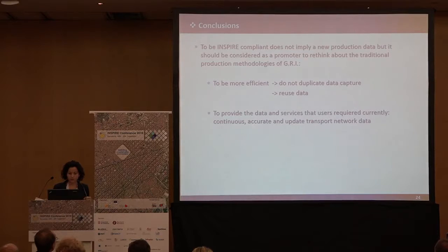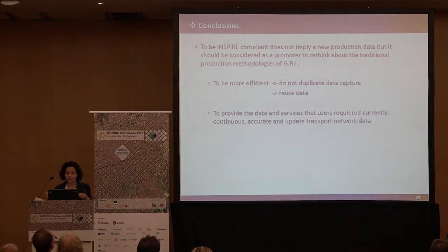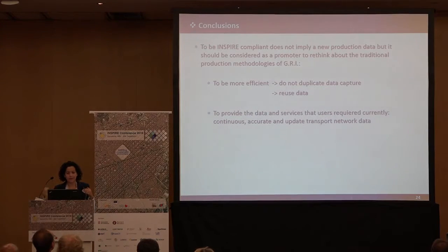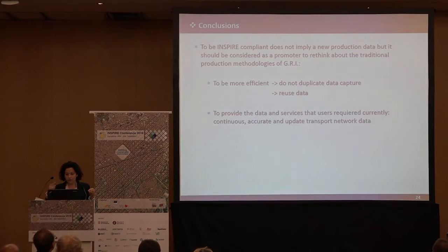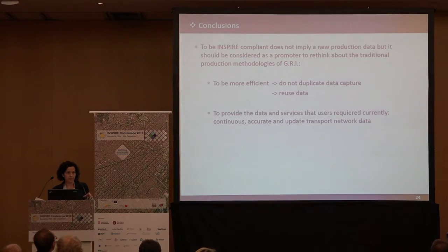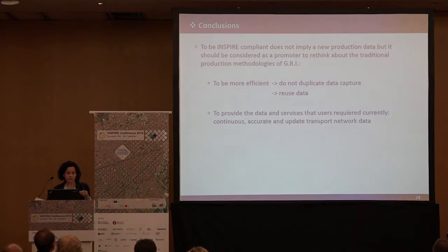To conclude, I would like to share a reflection. Being INSPIRE compliant doesn't imply a new production of data. As I explained at the beginning, we have been able to provide an INSPIRE-compliant answer, but we think it could be motivation to rethink — mainly for cartography agencies — to rethink about traditional production methodology, mainly on geographical reference information. To be more efficient according to INSPIRE principles. But what I think is more important is just to provide data and services on transport that users require currently — users want continuous, accurate and updated transport network data.